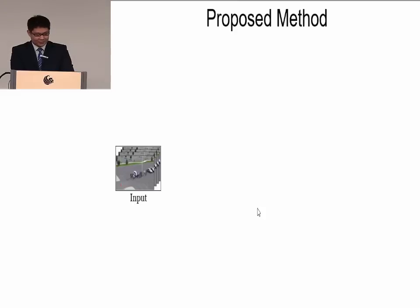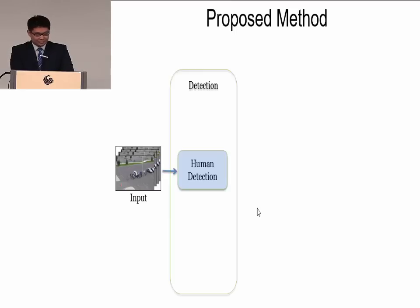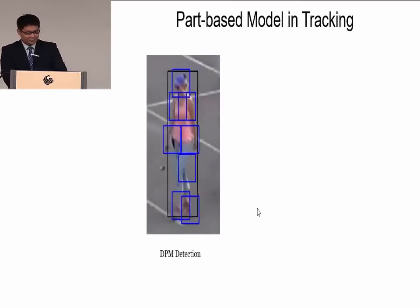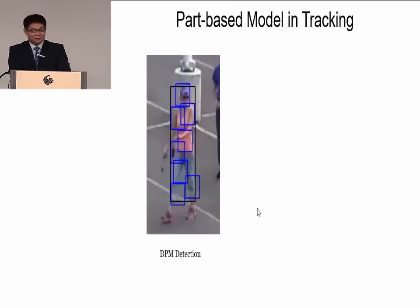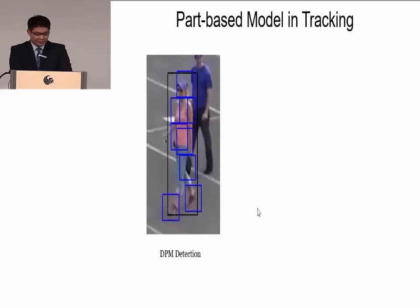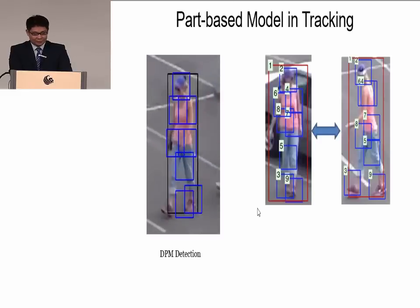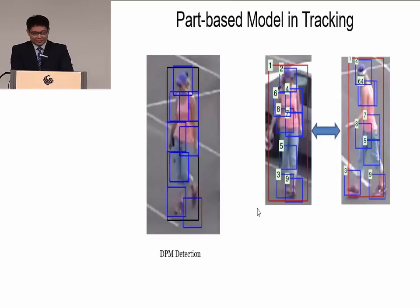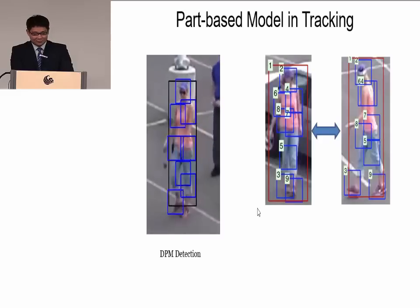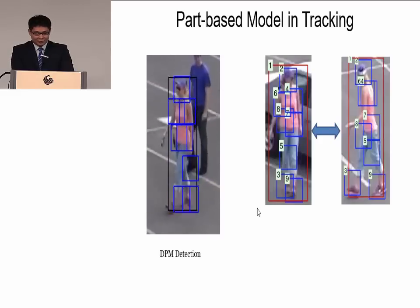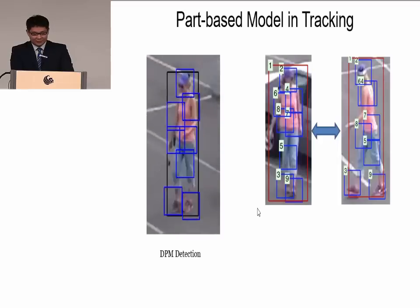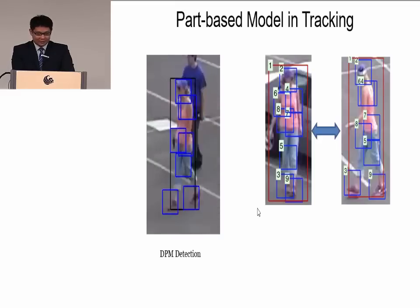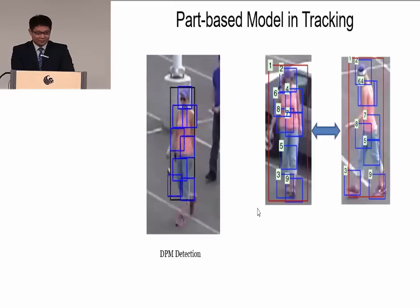Given the video input, first we do human detection using the DPM detector. The detection results show the parts moving according to the person's motion. Inspired by this, we propose to use the part-based model in tracking. This figure shows two views of the same person in a video — all the parts strictly correspond: part 2 is always the head, and parts 3 and 9 are always the feet.